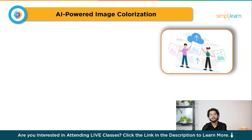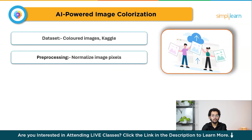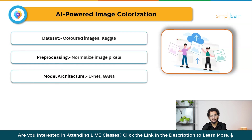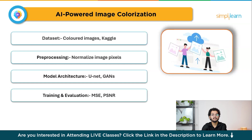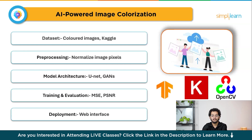To build this project: Step 1 is data collection — use a dataset of colored images, convert them to grayscale, and use grayscale images as inputs while training the model to output colorized versions. Step 2 is preprocessing — normalize image pixel values and resize them for training. Step 3 is model architecture — implement a U-Net model or Generative Adversarial Network (GAN), which are well suited for image generation tasks like colorization. Step 4 is training and evaluation — train the model using mean squared error for guidance, and evaluate with visual inspection and peak signal-to-noise ratio (PSNR). Step 5 is deployment — create a web interface where users can upload black and white images and get them colorized. Tools: TensorFlow, Keras, OpenCV, Flask. Skills gained: deep learning, CNNs, GANs, and image preprocessing.